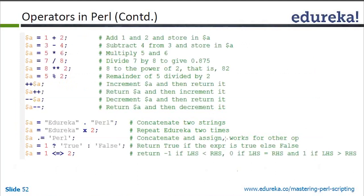We have expressions like: dollar a equals 1 plus 2, dollar equals 3 minus 4. You can use any of the operators we've seen. There are binary operators, which require two expressions (left-hand side and right-hand side), and unary operators like plus-plus (post-increment and pre-increment), which only need one expression.